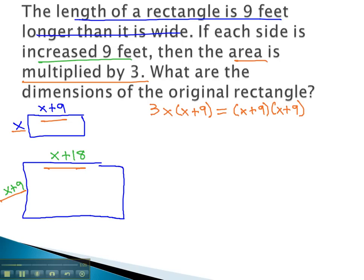In order to make this into a form we can solve, let's multiply it out. Distributing the 3x through, we get 3x squared plus 27x equals...